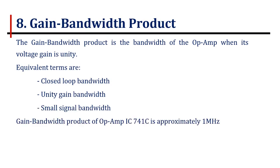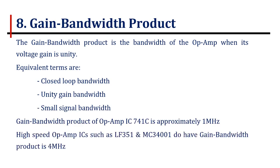The gain bandwidth product of the op-amp IC 741C is approximately 1 MHz. However, there are some high speed ICs such as LF351 and MC34001 that have high gain bandwidth product of 4 MHz.